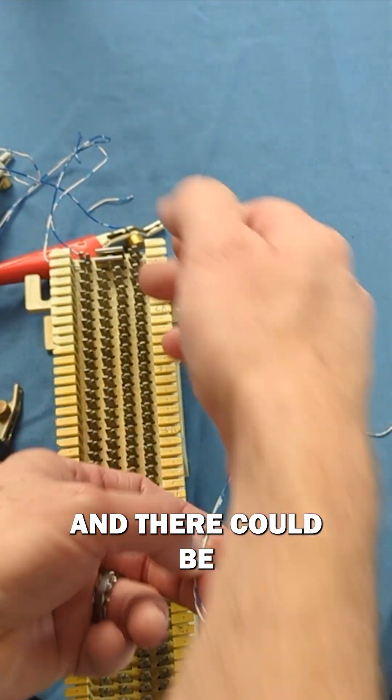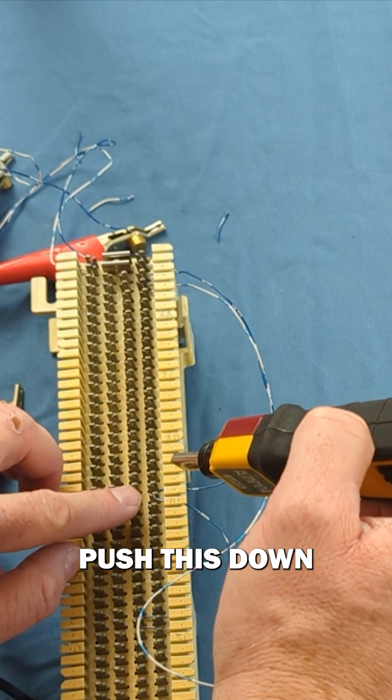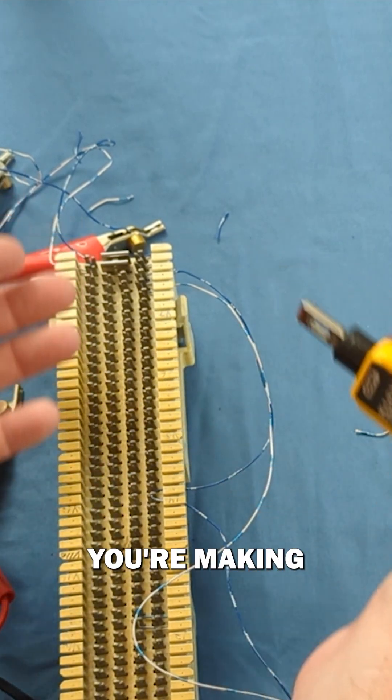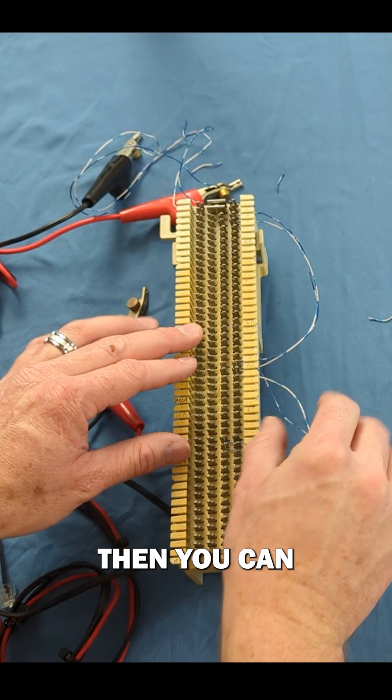There could be a dozen of these, there could be two or three of them. Push this down without actually cutting it, because when you're making a daisy chain you obviously don't want to cut it. Then you can activate multiple sets of pins.